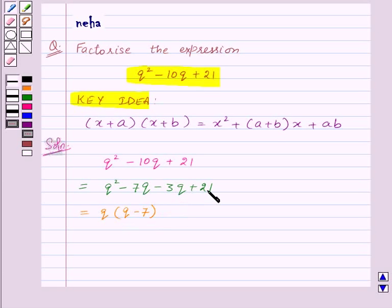Let's take q common from the first two terms and we are left with q minus 7. Now, from the last two terms, we will take minus 3 common and we are left with - now we have taken minus sign common outside the bracket, that means signs inside the bracket will change - so we will get plus q minus 7. Now, in these two terms, the factor q minus 7 is common. So, let's take it outside and we will get q minus 7 into q minus 3.